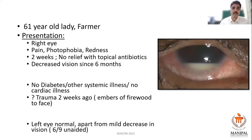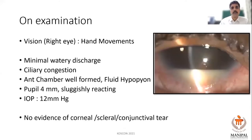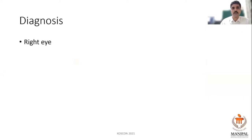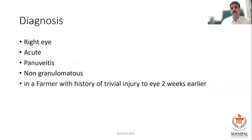Good morning. I would like to thank the organizers for giving me this opportunity. I'll be presenting a case of hypopyon uveitis that posed a diagnostic challenge. The patient was a 65-year-old female farmer presenting with photophobia and pain in the right eye with redness for two weeks, with no relief from topical antibiotics and decreased vision over six months. She was not diabetic and had no systemic illnesses. She had a vague history of trauma — embers of firewood fell on her face but she wiped them off immediately, with no bleeding from the eye. The other eye was normal with 6/9 vision.